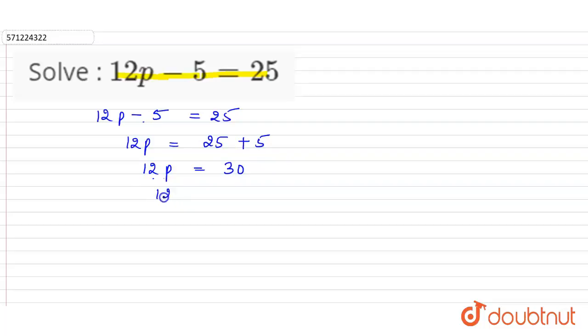Now here 12 into p. 12 into p is equal to 30. Now 12 is in multiplication here. So p will be equal to 30. We are transferring this 12 to the right hand side, so it will be divided, so 30 divided by 12.